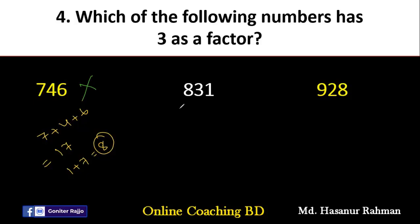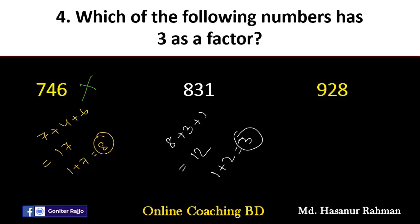Now let me check 831. If we add all the digits of 831: 8 plus 3 plus 1 is 12. Adding 1 plus 2 gives 3. Yes, 3 is divisible by 3. So 831 is also divisible by 3. We can say 3 is a factor of 831.